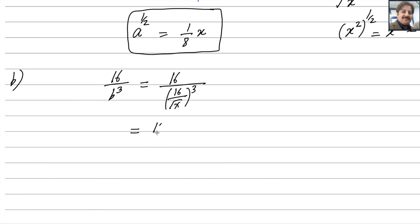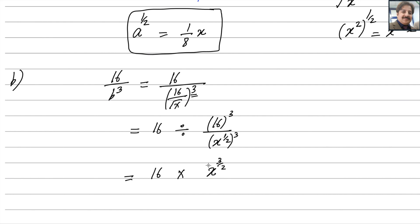In the next step, we can write 16 over (16 over x^(1/2))^3. The power becomes the power of each number under it, so the denominator becomes 16 cubed over x^(1/2) raised to the power 3, which is x^(3/2). Then, dividing by a fraction means multiplying by its reciprocal, so we multiply by x^(3/2) over 16 cubed.